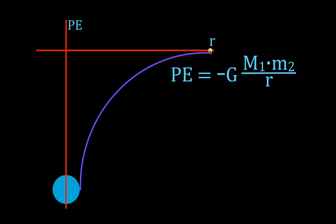We have this very important point here: at this distance r, we say we're infinitely far away from the Earth. When we're infinitely far away — as I showed in the previous slide — that is where we define the potential energy to be zero. When we're infinitely far away from the Earth, the object feels no more gravitational influence, and therefore the potential energy between that object and the Earth is zero.